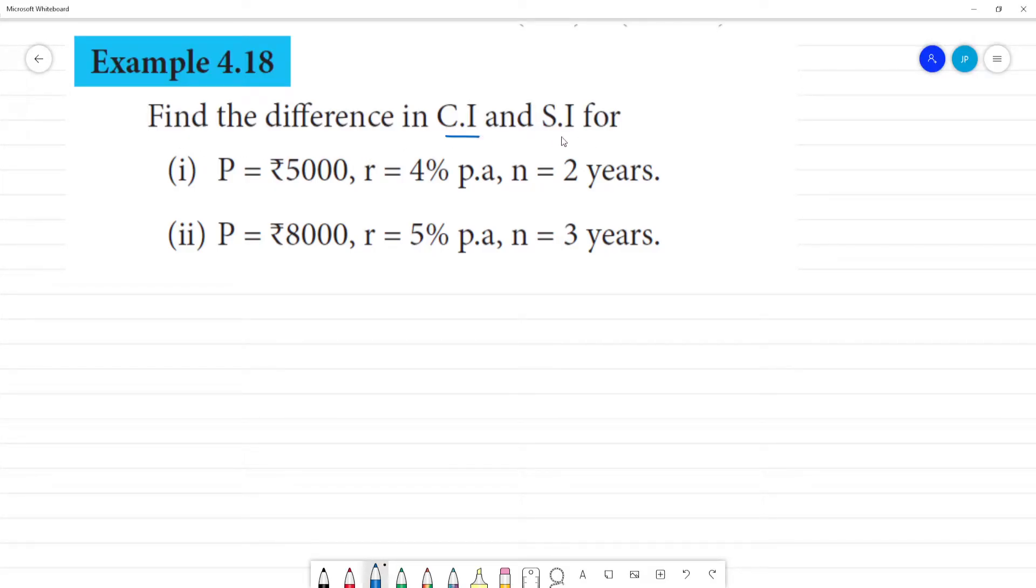Find the difference between compound interest and the simple interest for 2 years or 3 years. To get the first 2 years we need the formula to get the compound interest minus simple interest. What is the formula? P into r by 100.